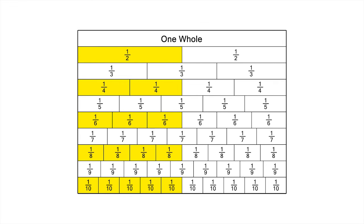One way to check for equivalent fractions is to see which fractions line up with one half when you draw a vertical line from the end of one half down the fraction wall. The ends of two quarters, three sixths, four eighths, and five tenths all line up nicely with one half.